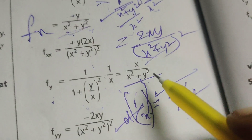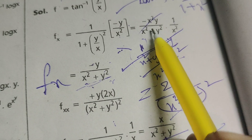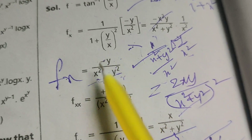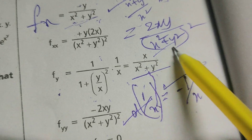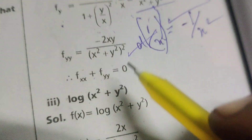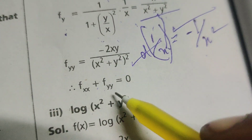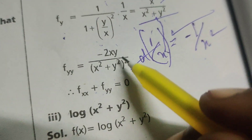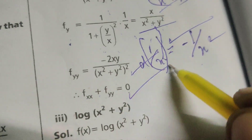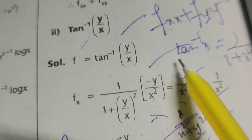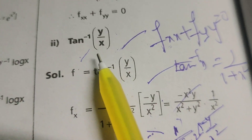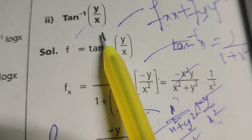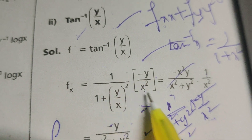Now fxx equals 2xy by x square plus y square whole square, and fyy equals minus 2xy by x square plus y square whole square. Adding them, we get zero. Hence proved — the given condition is satisfied by the differentiation of the given function tan inverse of y by x.